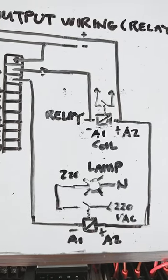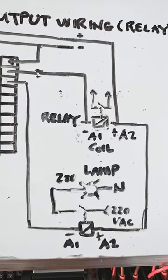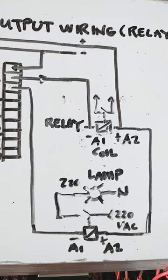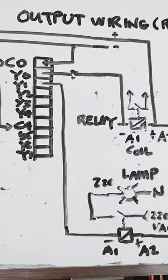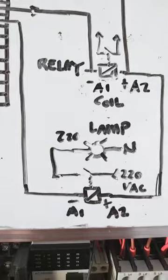So negative will be supplied to A1, then the positive 24 volts is connected to A4. Based on our ladder program, it will activate this relay.